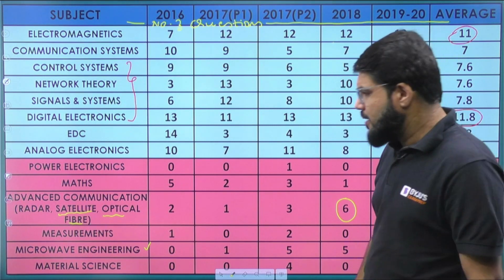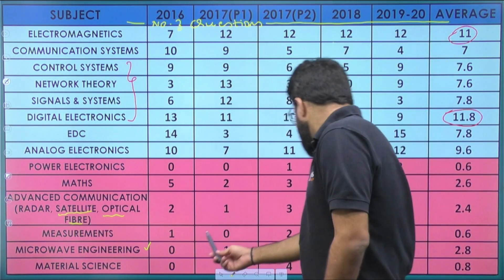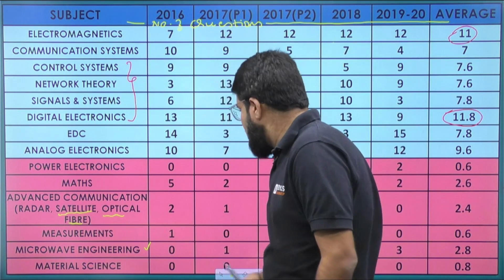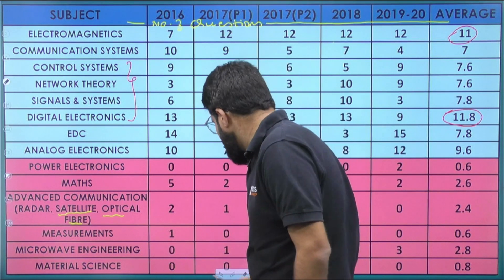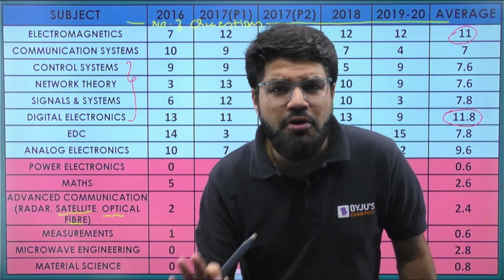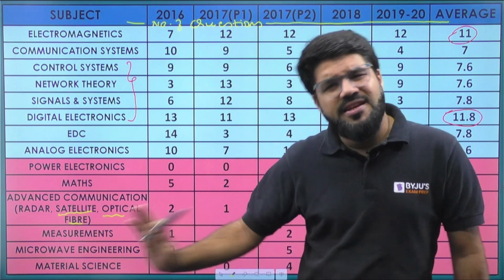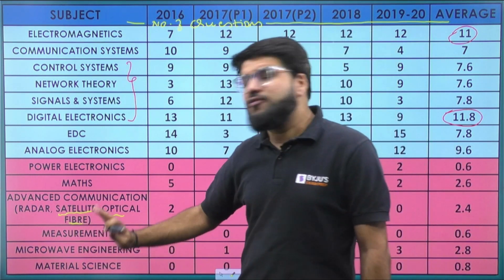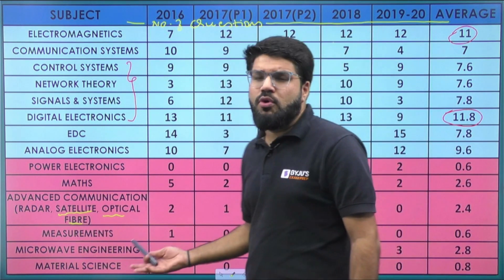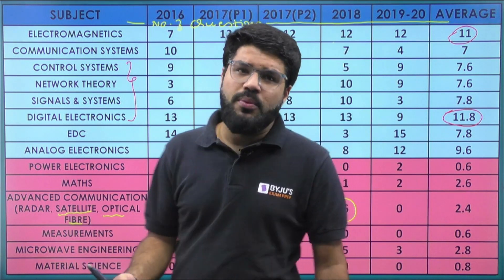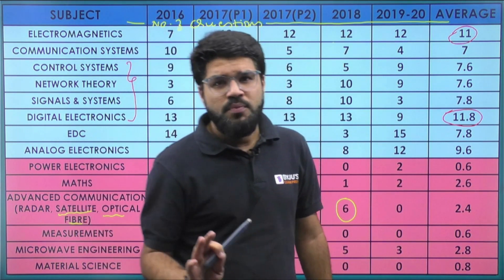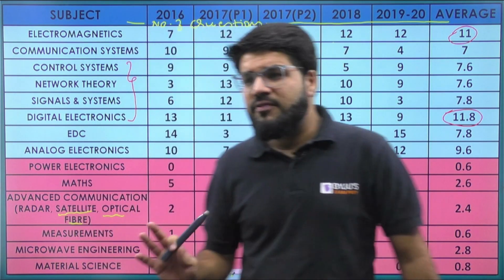For measurements: again only one or two questions. Similar to power electronics, I'd suggest you prioritize it like this — if you've studied measurements for ESE, just revise it. If you haven't studied it at all, it depends on your time. You can skip it since studying a subject in detail for just one or two questions may not be worth it — that's a decision you need to take.